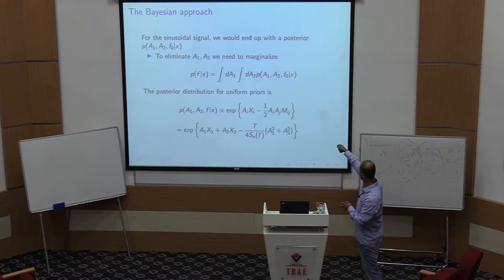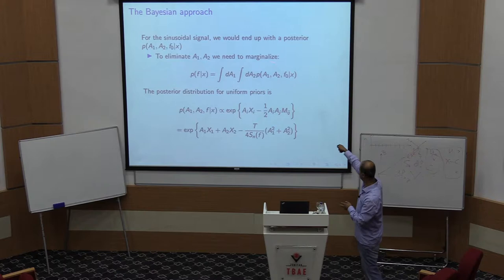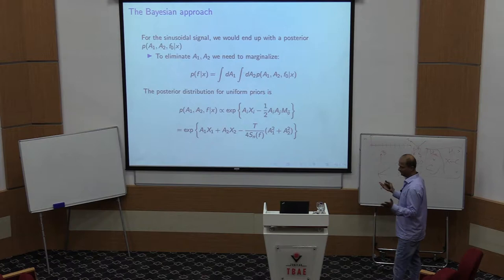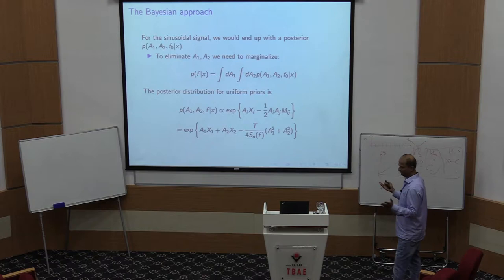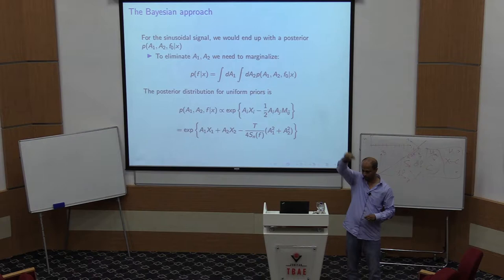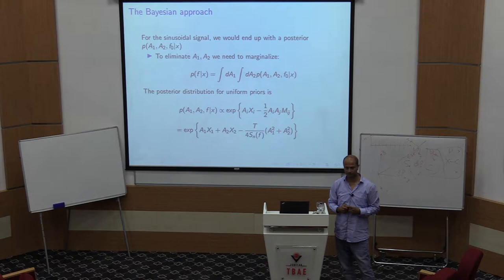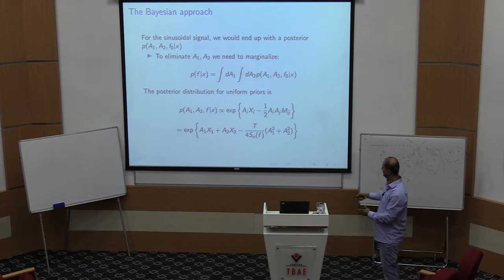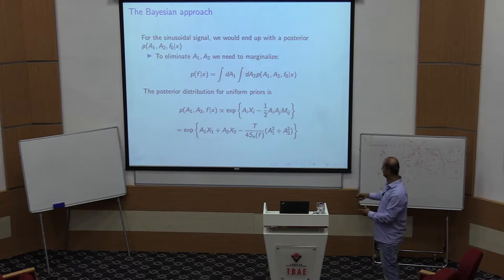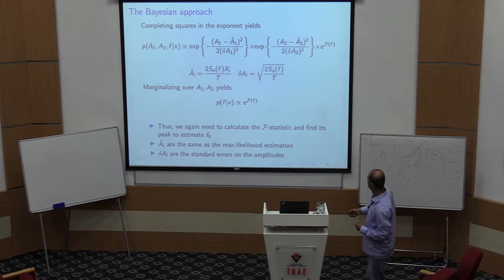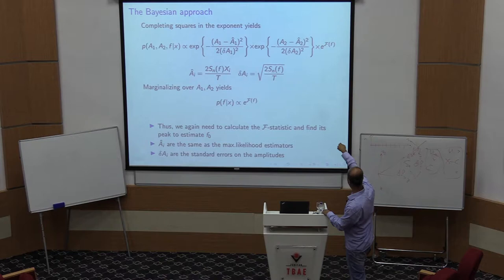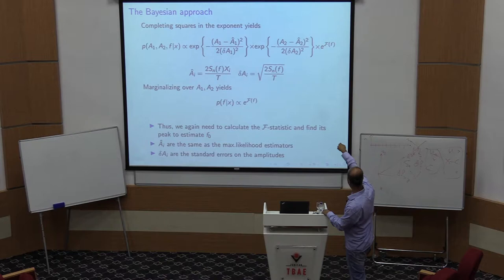A frequentist finds the maximum over a1 and a2 — which is what we did previously. A Bayesian averages over a1 and a2, which arguably gives more information by integrating over the full distribution rather than just the maximum. We can actually do this integration because the likelihood is Gaussian in the amplitudes.